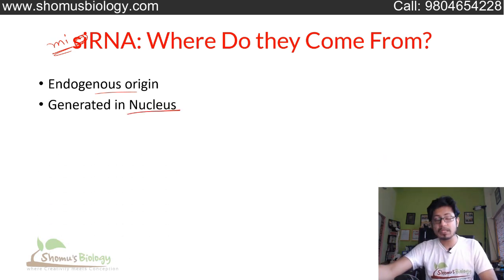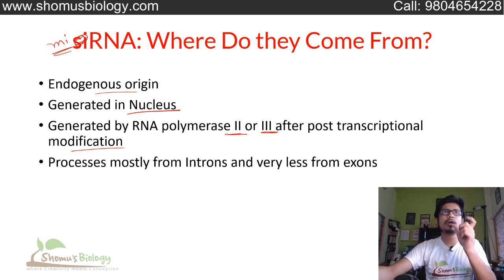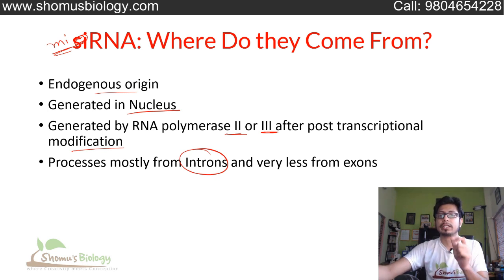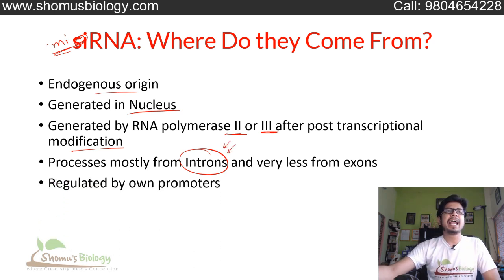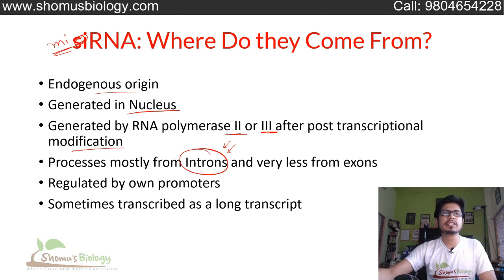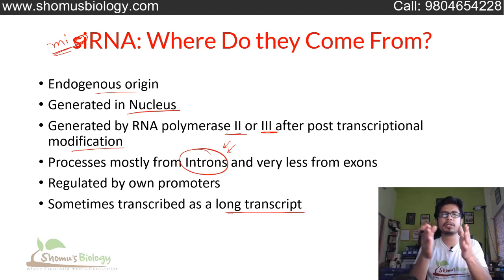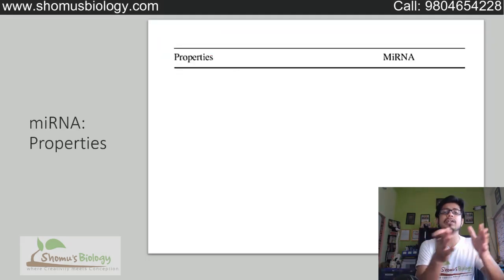miRNA is generated in the nucleus, generated by RNA polymerase 2 or polymerase 3 after post-transcriptional modification. Most of this miRNA is produced from introns or non-coding elements of the eukaryotic gene or eukaryotic chromosome — not from the exons, very rarely from the exons. Mostly they are produced from introns only and are regulated by their own promoters. Sometimes they are transcribed as a long transcript and need to be cleaved into smaller fragments before being used as microRNA to degrade a target mRNA.